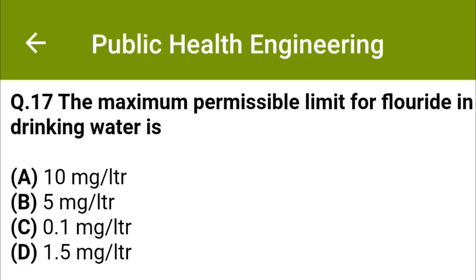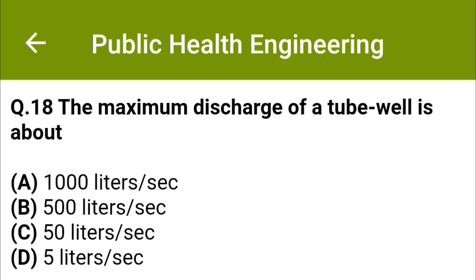The maximum permissible limit for fluoride in drinking water is: option A: 10 mg/L, option B: 5 mg/L, option C: 0.1 mg/L, option D: 1.5 mg/L. The correct answer is option D: 1.5 mg/L. The maximum discharge of a tube well is about: option A: 1000 litres/second, option B: 500 litres/second, option C: 50 litres/second. The correct answer is option C: 50 litres/second.